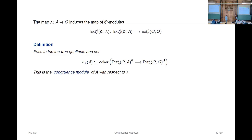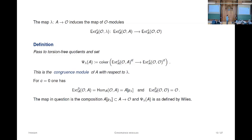That this is the right thing to do is only apparent after the fact—this is what turns out to do the job we wanted. For C equal to zero, the source of this map is just Hom_O(O,A), which is the P-torsion part of A, and the target is just O, the endomorphisms of O as an A-module. So the map in question is the map from the P-torsion part to A, and this is what Wiles calls the congruence ideal eta. The cokernel is the congruence module of A—for C equal to zero, it coincides with the congruence module as introduced by Andrew Wiles.